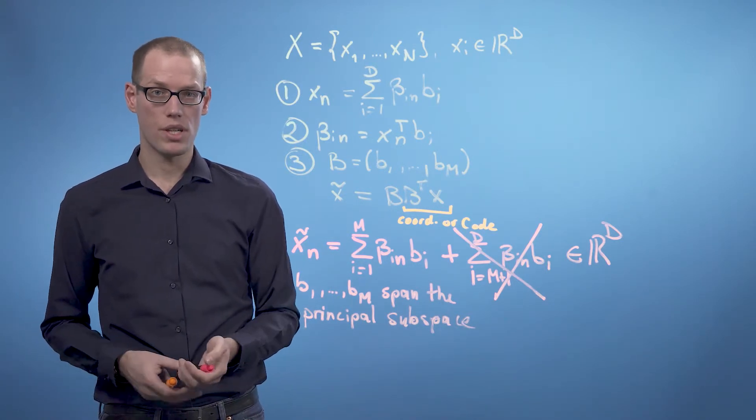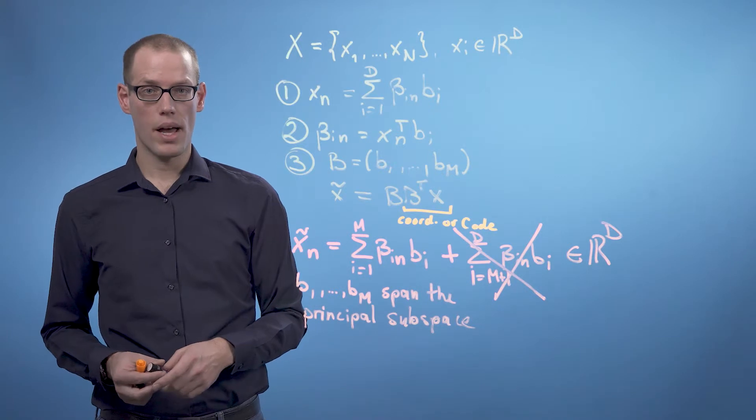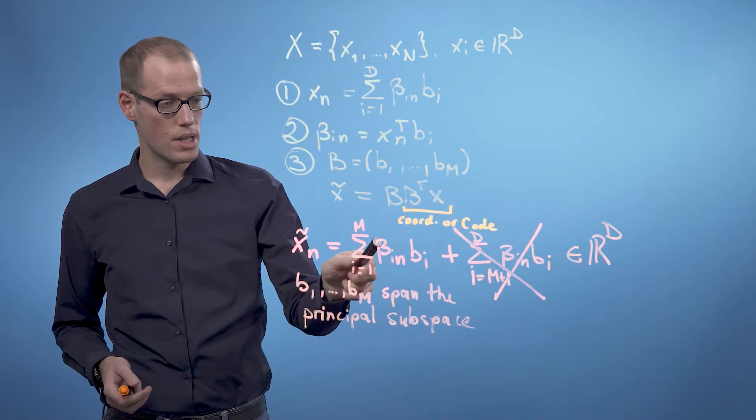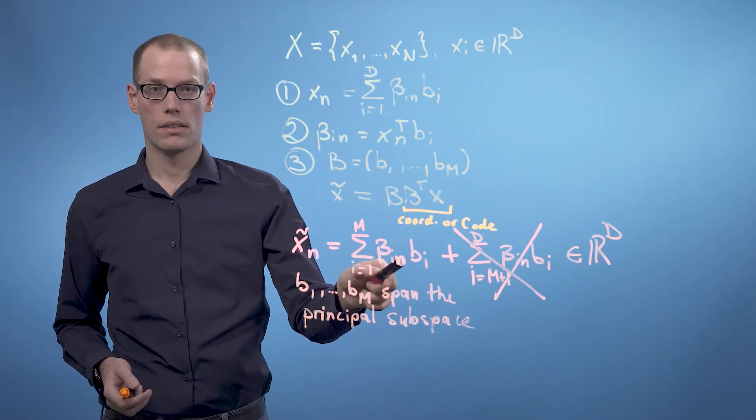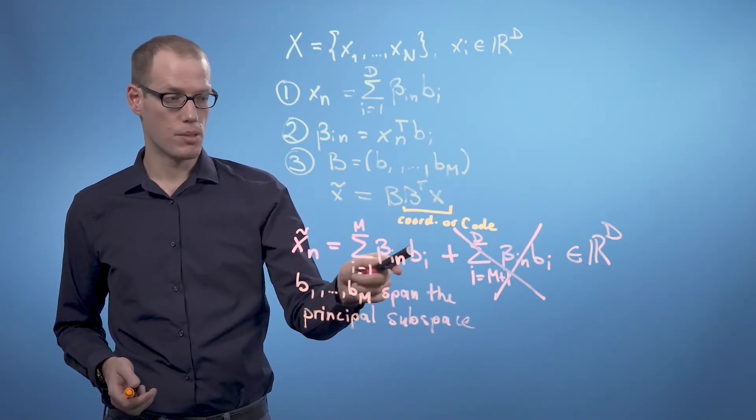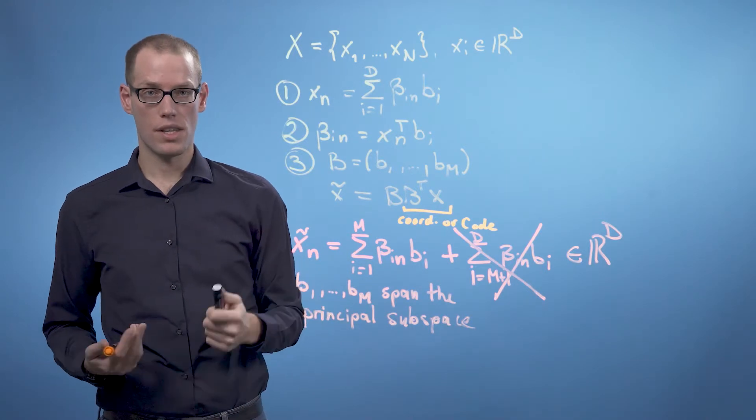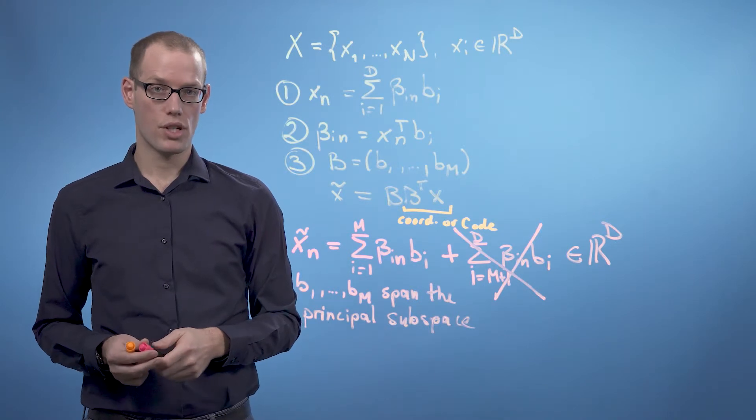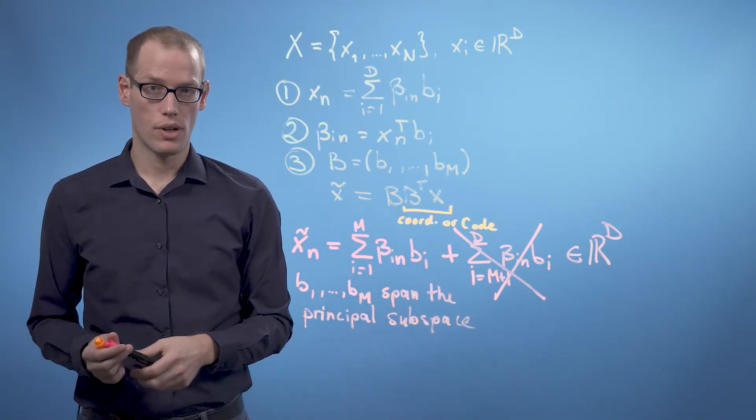And the setting now is as follows. Assuming we have data X_1 to X_n, we want to find parameters beta_in and orthonormal basis vectors b_i such that the average squared reconstruction error is minimized.